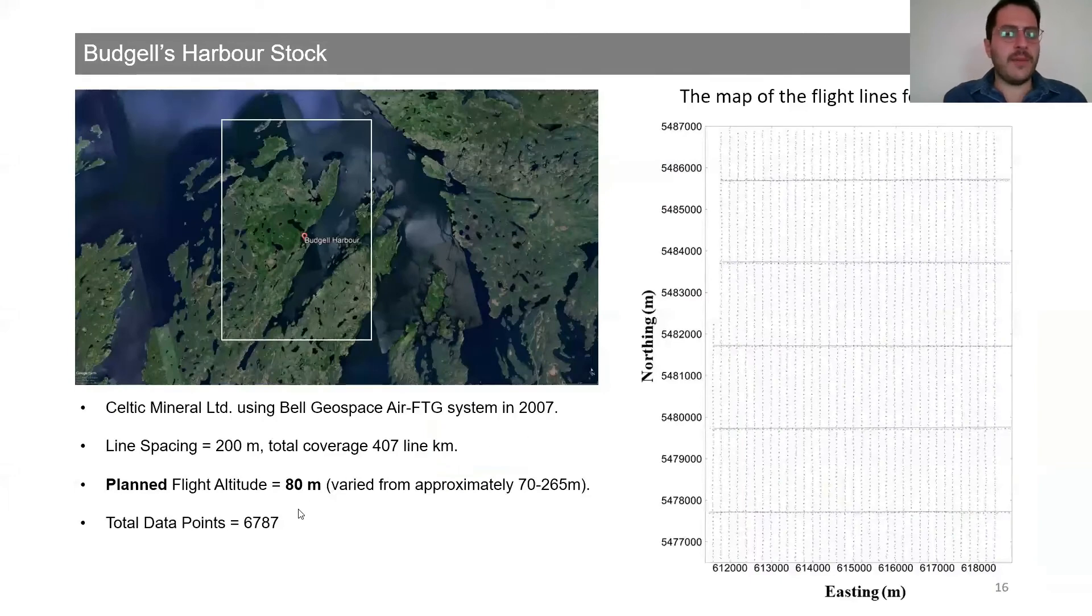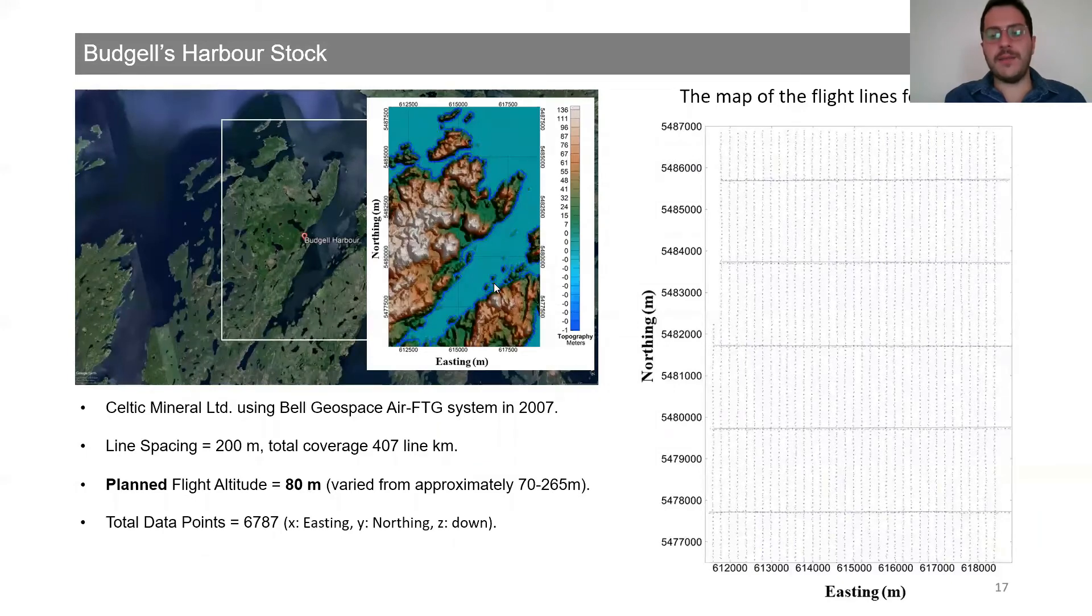An airborne gravity gradiometry survey was conducted by Celtic Mineral using the Bell Geospace air full tensor gradiometry system in 2007. Line spacing was 200 meters with total coverage of 407 line kilometers. Planned flight altitude was 80 meters. However, due to topography it varied from approximately 70 to 265 meters. On the right figure you can see the map of the flight lines for the FTG data. These horizontal lines are called tie lines. The purpose of collecting these lines is to make sure that data was collected correctly.